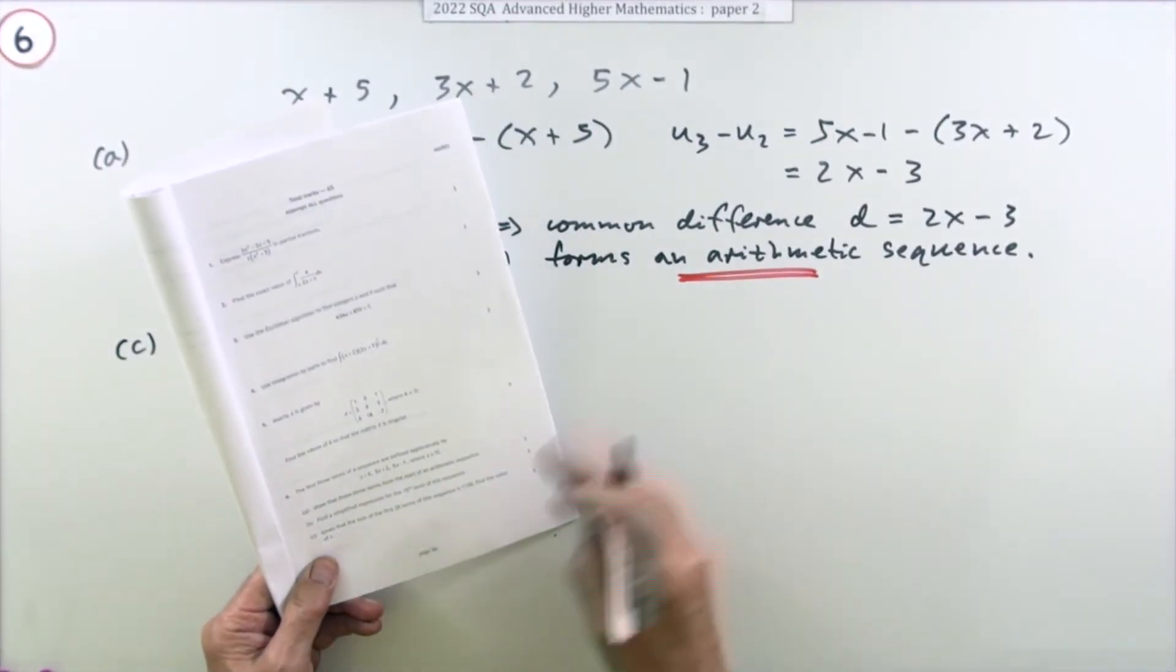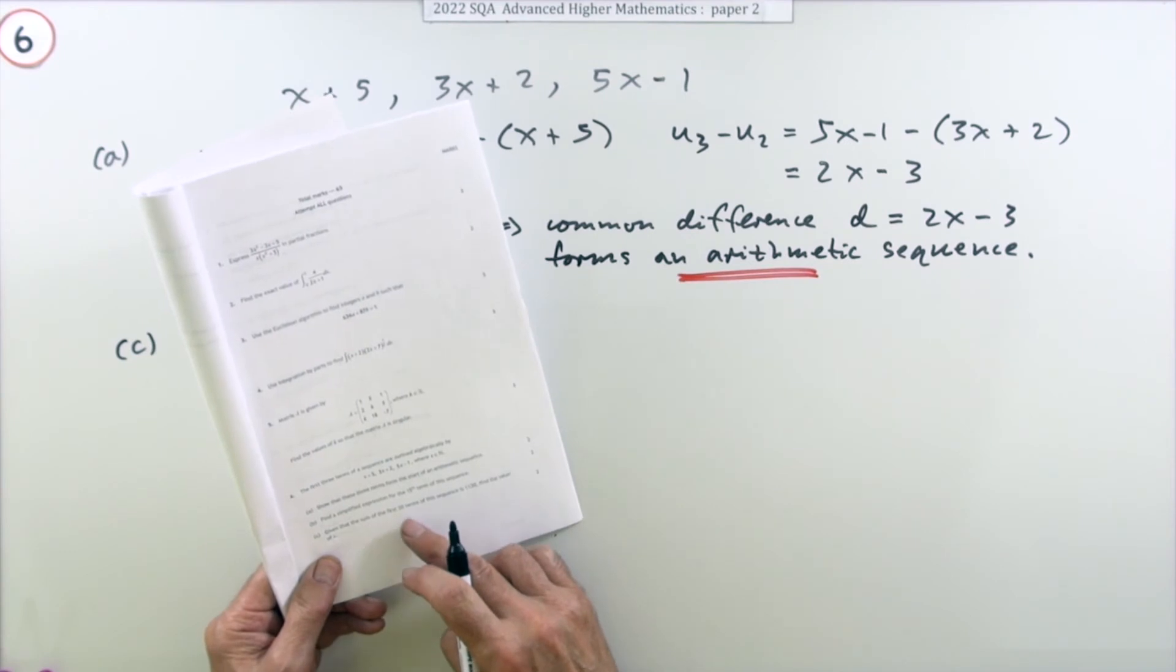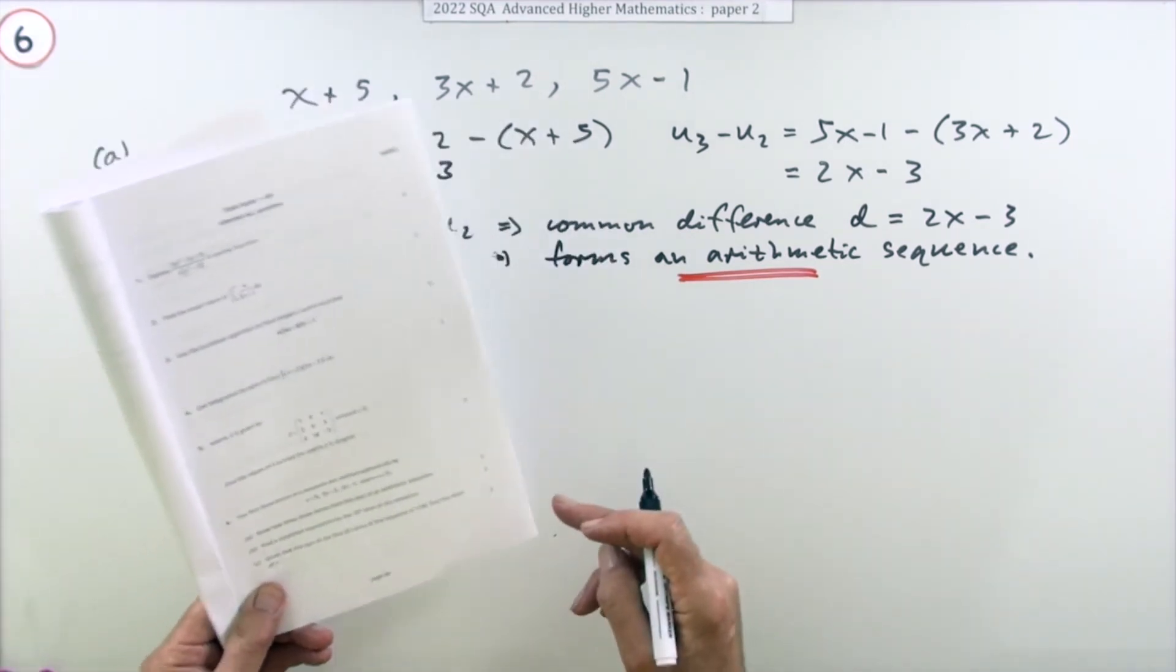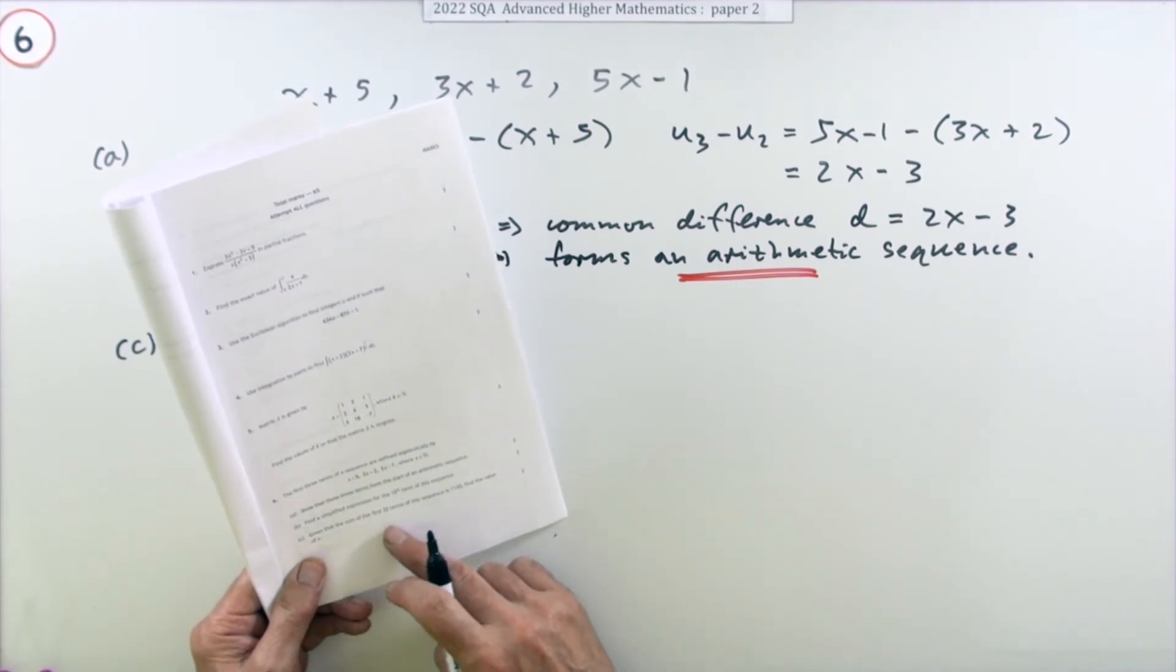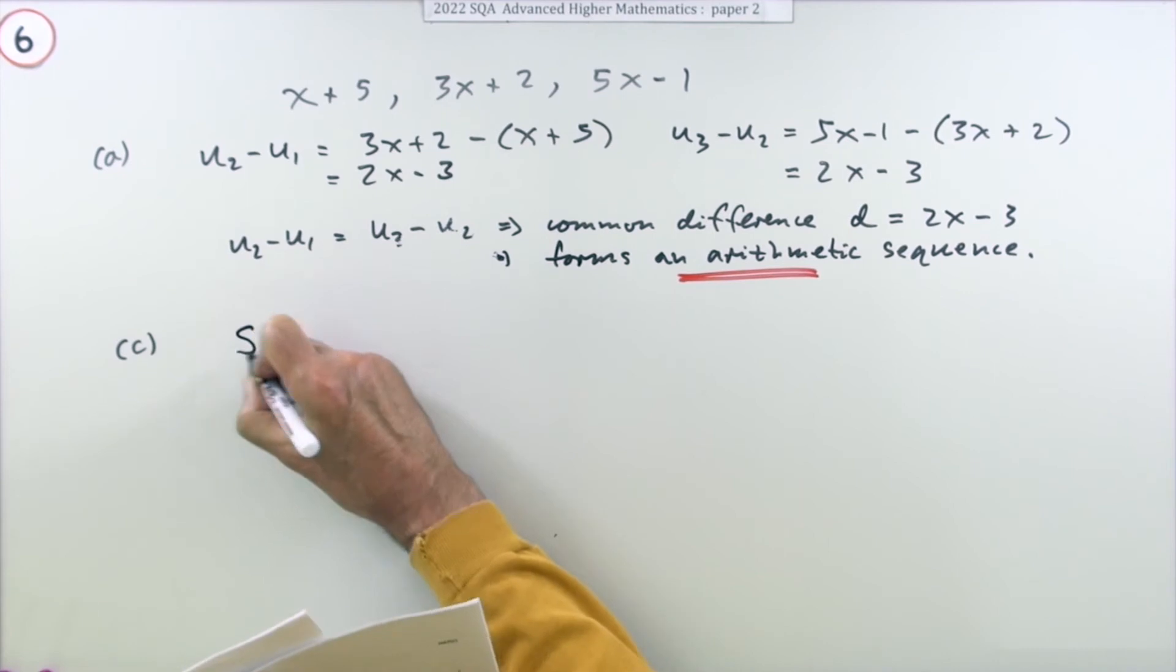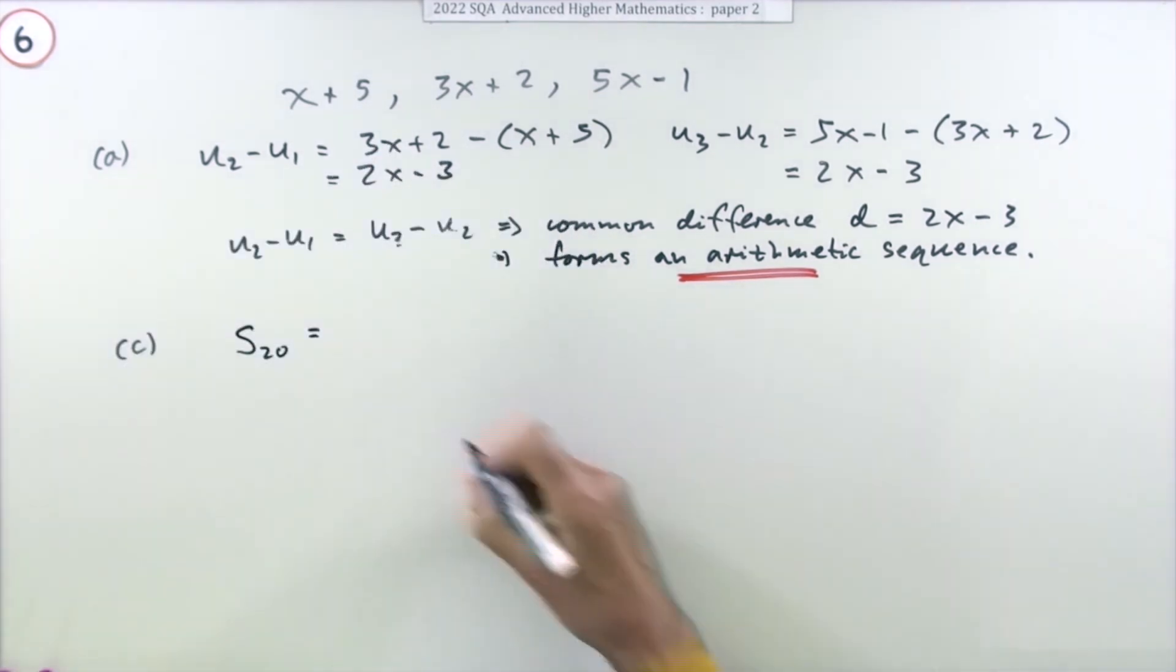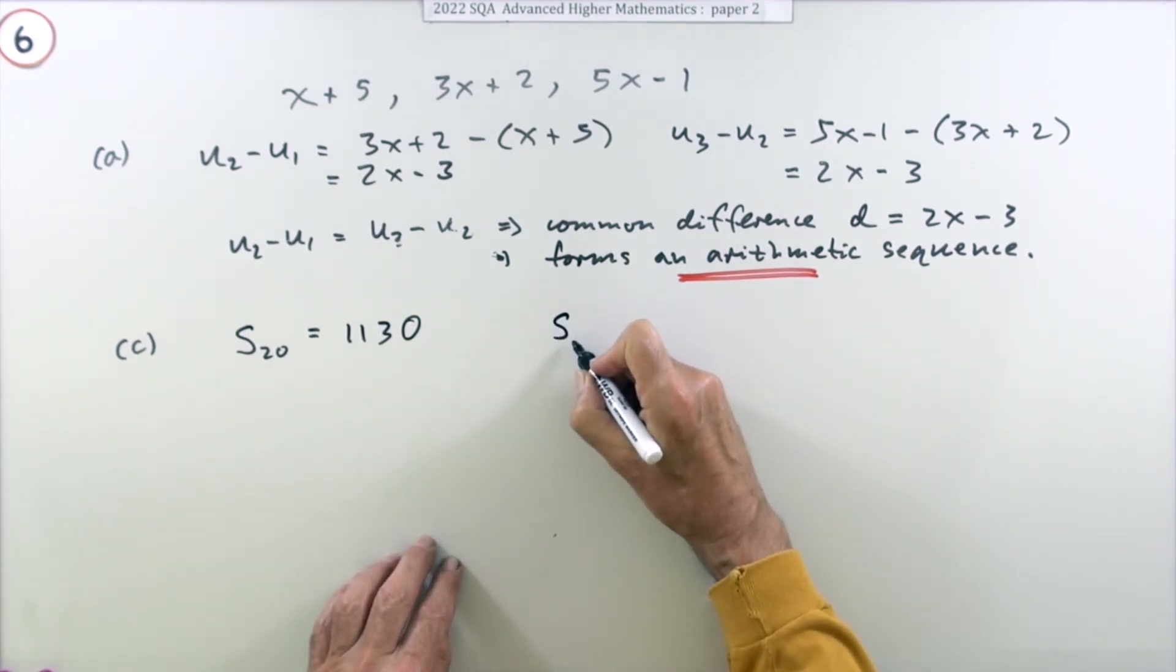Part C, then, again two marks. Given that the sum of the first 20 terms - you're just going to use the formula for the sum, which is actually given in the front if you don't remember it. Given that the sum of the first 20 terms of the sequence is 1130, I'll just put that down: the sum of the first 20 terms is 1130. Find the value of x.